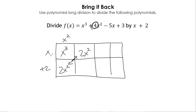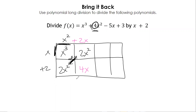What times x would give me 2x squared? That's 2x. You see those exponents going down. Now we're going to take 2x and multiply it times two on the outside, and that's going to give us 4x — just 4x because look at that, it's to the first power.